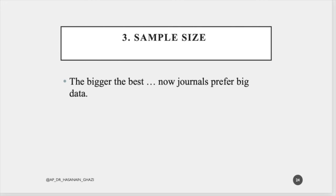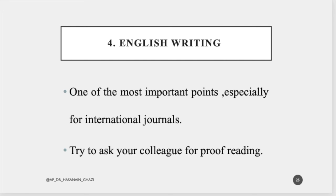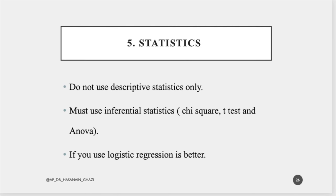Number three is sample size — the bigger the better. We are in the era of big data; more than 1,000 is a good number, and a paper with only 100 participants has a very high rejection rate. Number four is English writing — poor English is one of the most common rejection reasons, so if your English is not good, send your manuscript to a professional English editing service. Number five is statistics — using only descriptive statistics leads to high rejection; use inferential tests like Chi-square, ANOVA, logistic regression, linear regression, or factor analysis to improve acceptance chances.